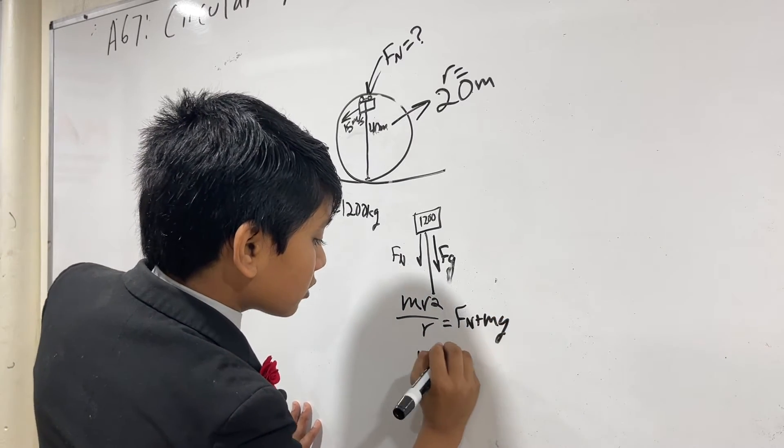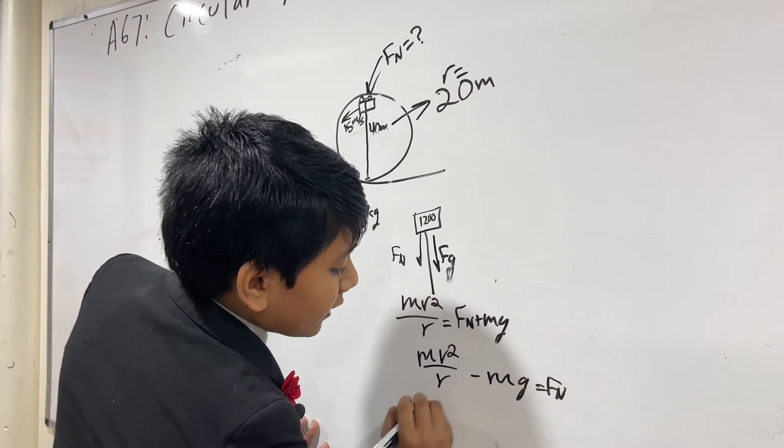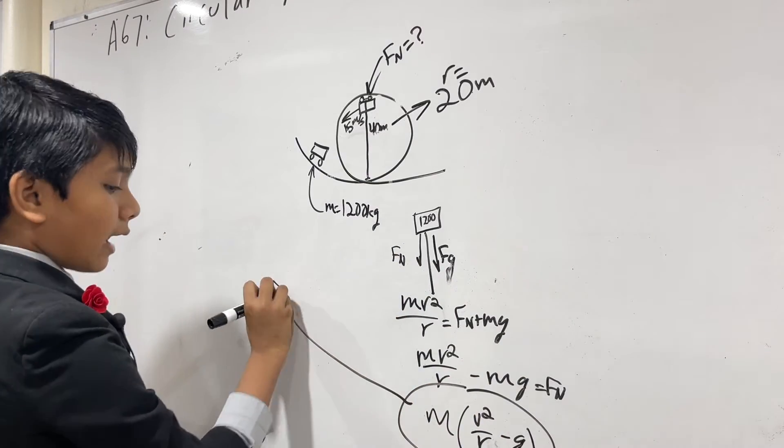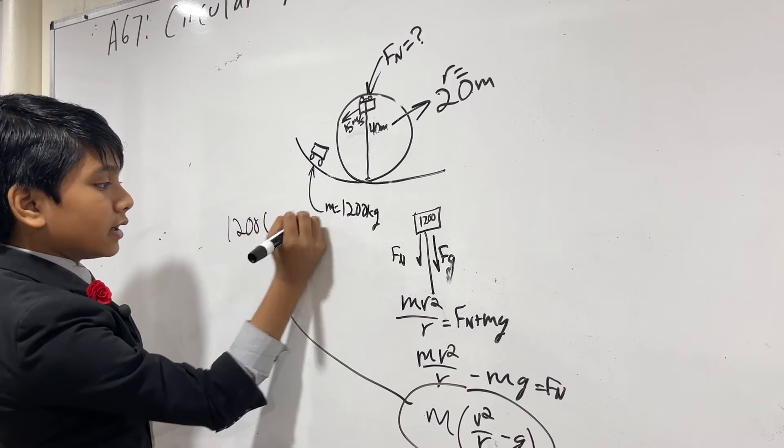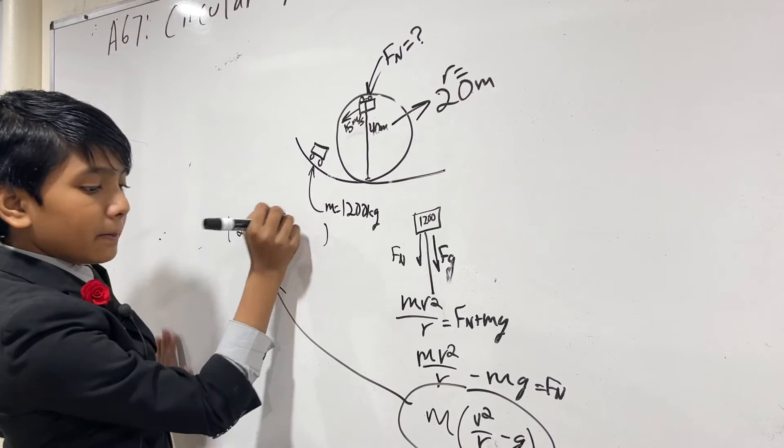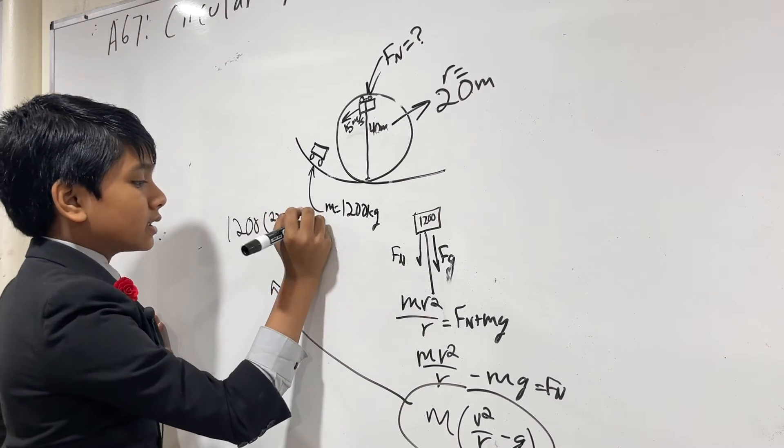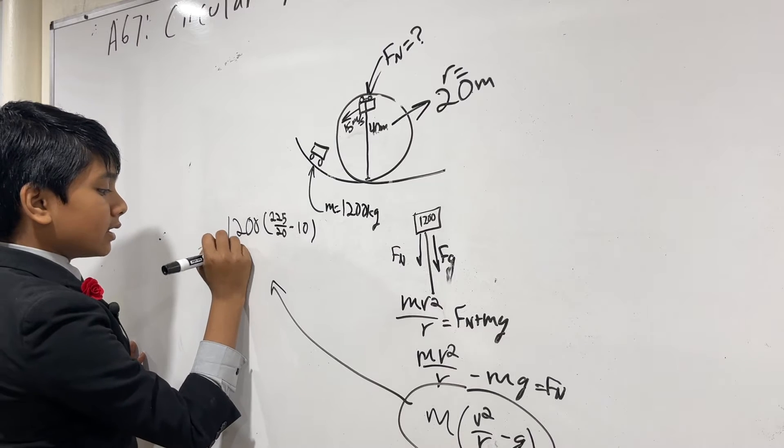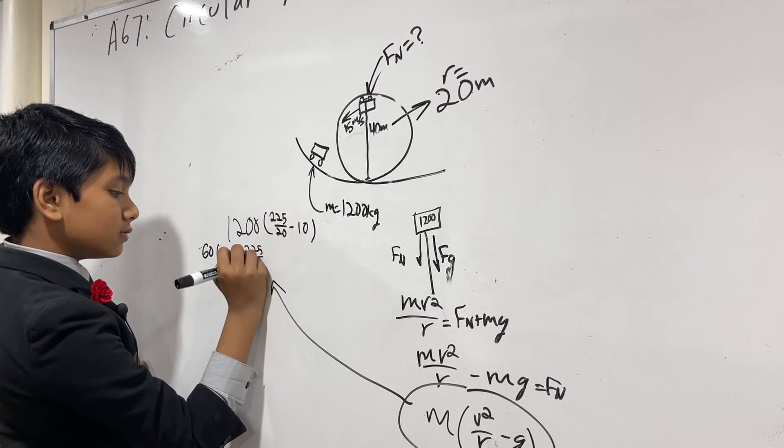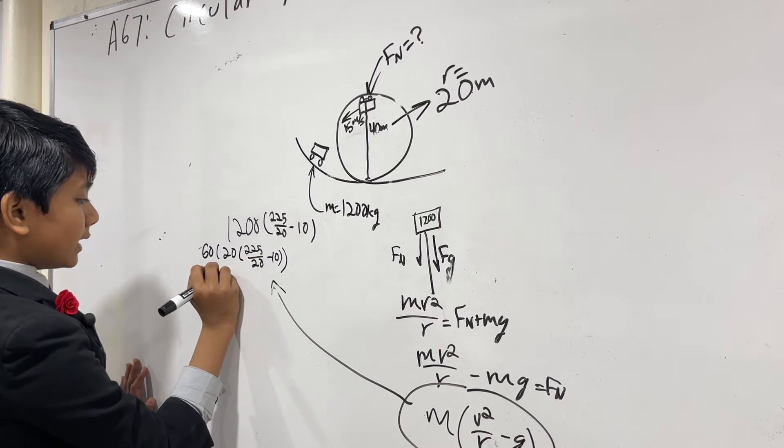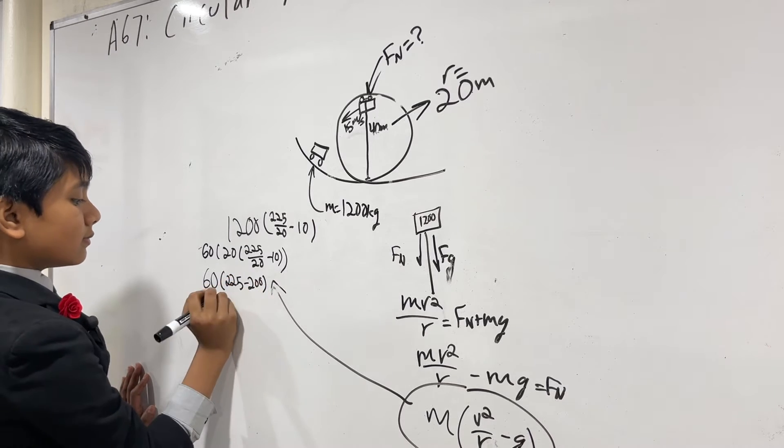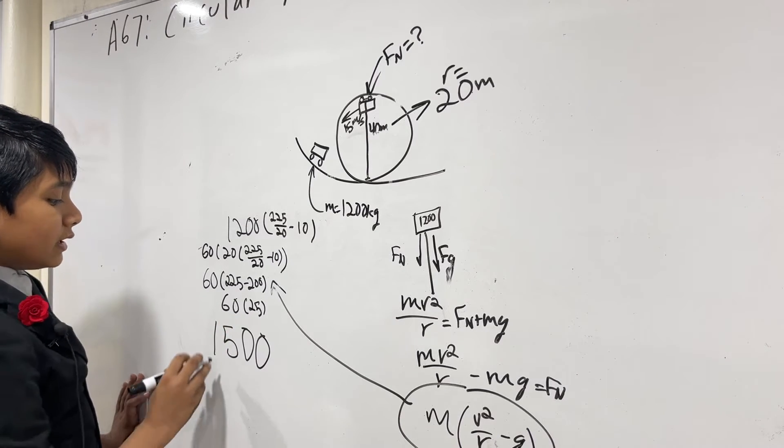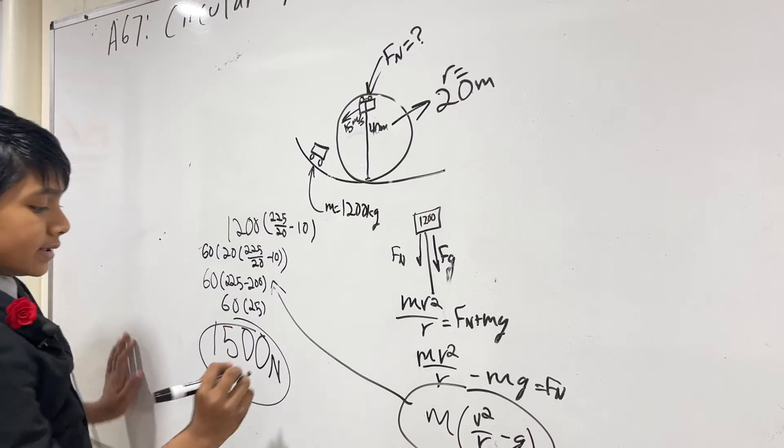So, now, we can send this over to the other side. MV squared over R minus MG is FN. In fact, we factor out the M. To get M times V squared over R minus G. So, now, we just plug our values in. We get 1200 times 225 over 20 minus our G is just 10. Because G is our acceleration due to gravity. So, now, we can actually do this in our head using some mental math tricks. So, we get 60 times 225 minus 200. Or, 60 times 25, which is pretty easy to do in your head. That just works out to 1500. Alright, 1500 newtons.